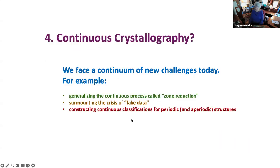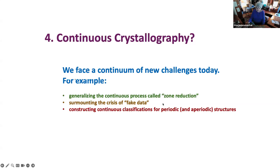That brings us to the question of continuous crystallography. You know much more than I do about this, and I'm just going to mention a few things. We face a continuum of new challenges today in bringing continuity into crystallography. The picture of the seashell tilings is an example of that — the continuous reshaping of the edges of the cells and the vertices. I'll just mention three things: generalizing the continuous process called zone reduction, surmounting the crisis of fake data, and constructing continuous classifications for periodic and aperiodic structures.